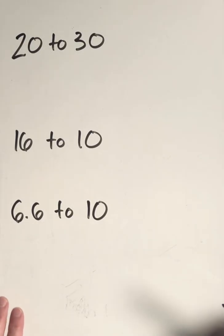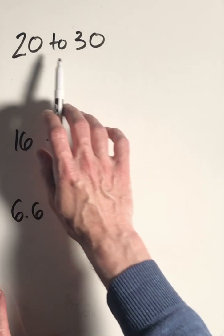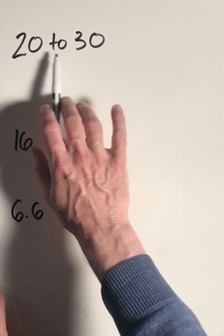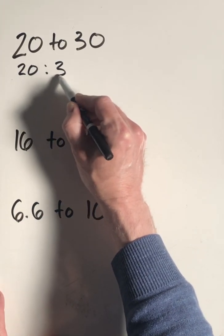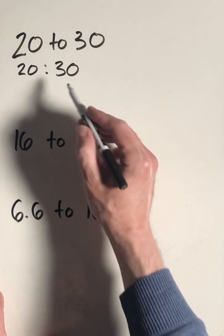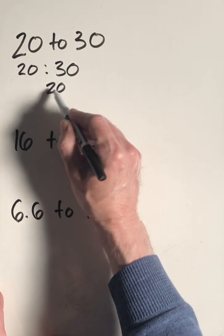A ratio can be written three different ways. We can have the two numbers being compared separated by the word 'to', we can use a colon to separate the two numbers, and we can also look at it as a fraction.